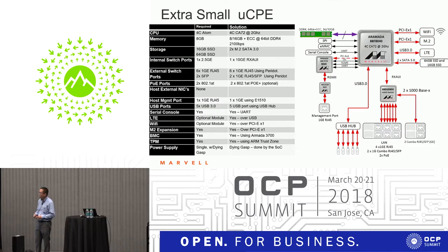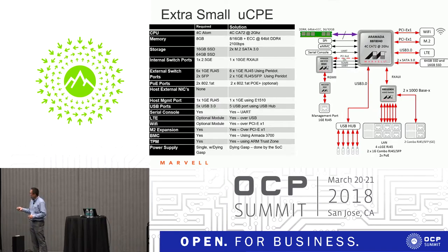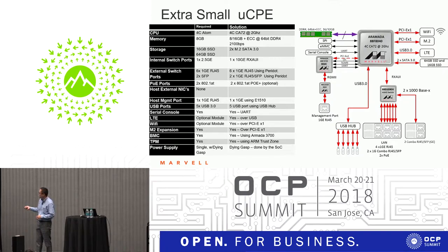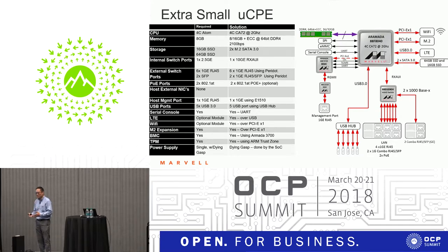The Extra Small Universal CPE uses a quad-core running up to 2 GHz with 64-bit DDR — 8 or 16 GB of DRAM. The original spec calls for 6 LAN and 2 WAN, with WAN being SFP or copper. We put in another SoHo switch, the 6390X, which has copper ports plus SFP ports that can be auto-config and auto-detect — demonstrating how a single chip can solve both the switching requirement and combo port requirement.